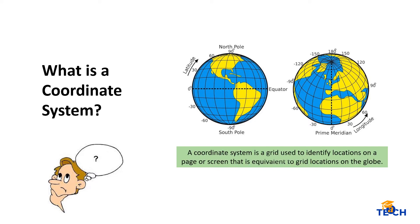A coordinate system is a grid used to identify locations on a page or screen, that is equivalent to grid locations on the globe. The most common coordinate system used involves longitude and latitude.